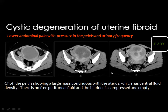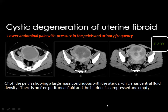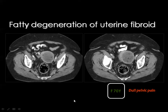Cystic degeneration within uterine fibroids appears as fluid density within masses affecting the uterine body. Fatty degeneration appears as hypodensities representing fat within the fibroid, which does not enhance as the myometrium does.